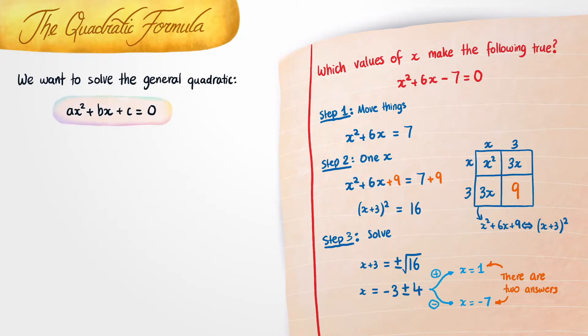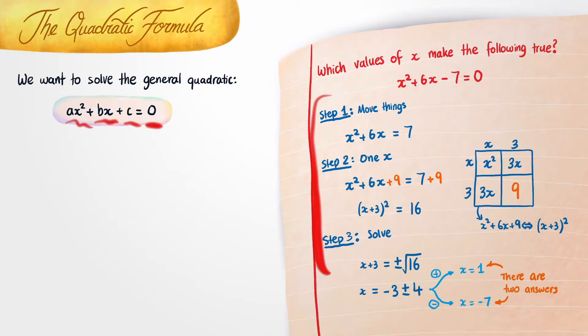In this lesson, we want to repeat these exact same steps for the general quadratic: ax squared plus bx plus c equals 0. In this quadratic, a, b, and c can be basically any number you like.